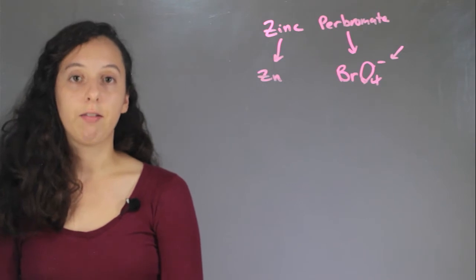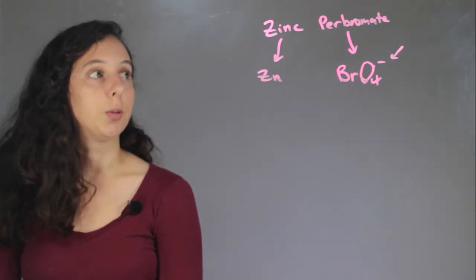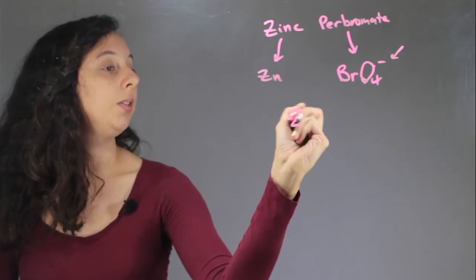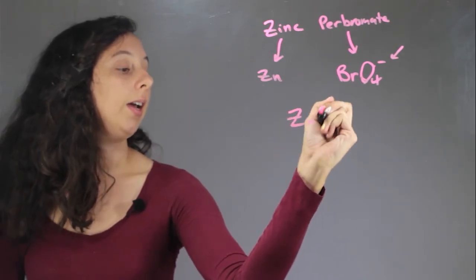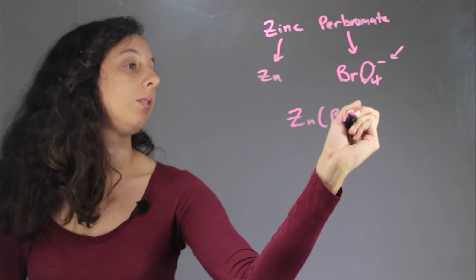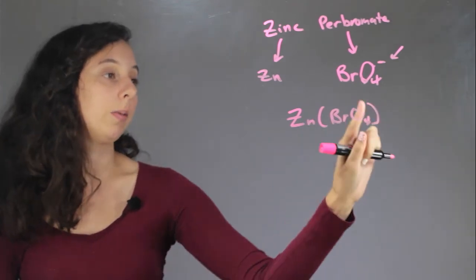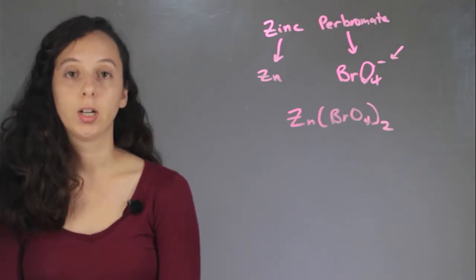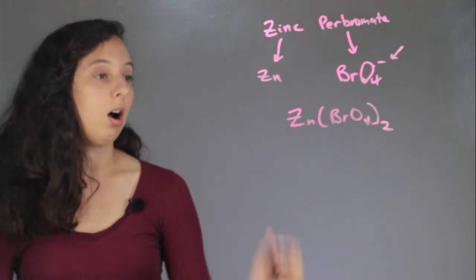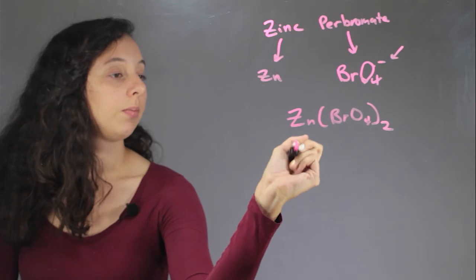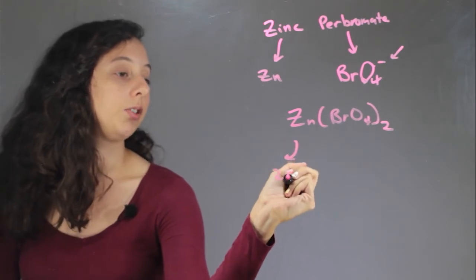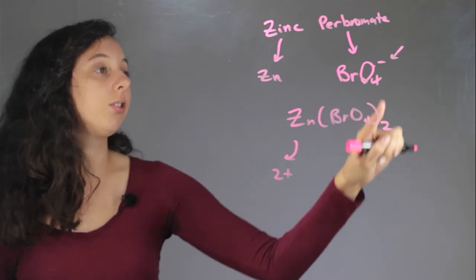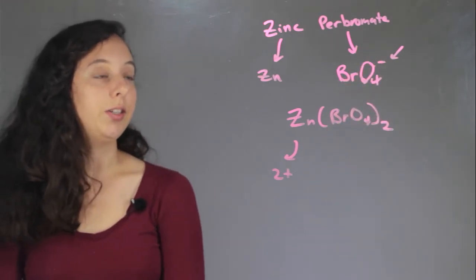So if we have the chemical formula of zinc perbromate, it turns out that it's actually one zinc and then two perbromates. So all the perbromates go into parentheses, and it has a subscript of two. So this means that our zinc atom is actually going to have a charge of plus two. We know this because it has to cancel out the two negative charges of the perbromate's bringing.